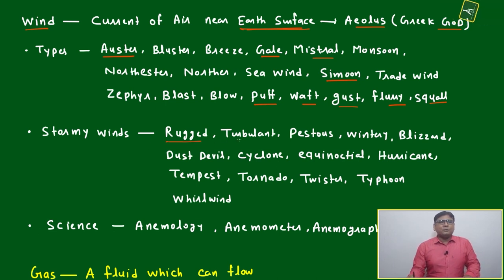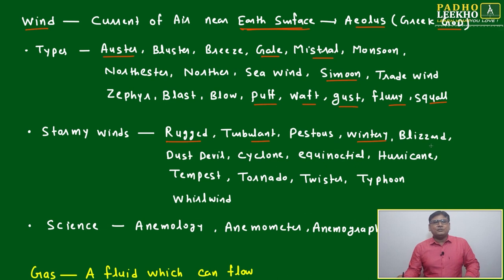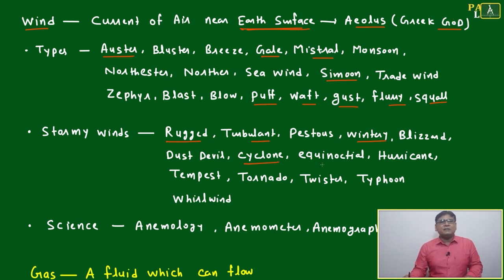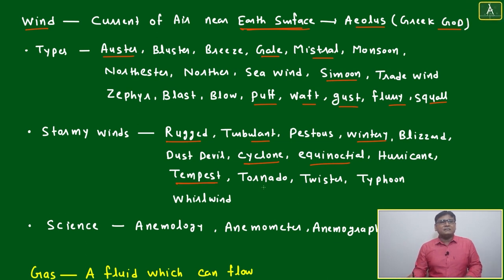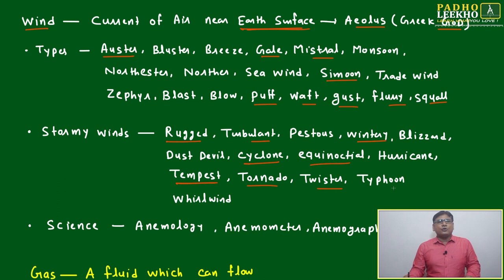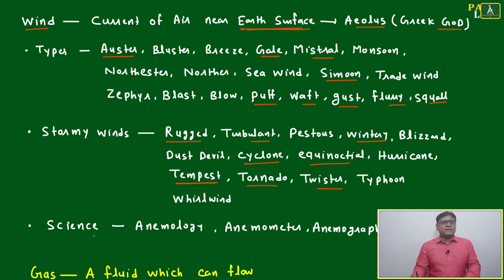Stormy winds: rugged, turbulent, tempestuous, wintry, blizzard, dust devil, cyclone, equinoctial, hurricane, tempest — tempest is also a very beautiful novel — tornado, twister, typhoon, whirlwind.